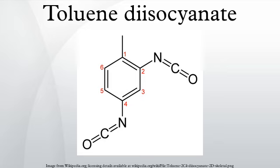Synthesis: 2,4-TDI is prepared in three steps from toluene via dinitrotoluene and 2,4-diaminotoluene. Finally, the TDI is subjected to phosgenation, i.e., treatment with phosgene to form TDI. This final step produces HCl as a by-product and is a major source of industrial hydrochloric acid.